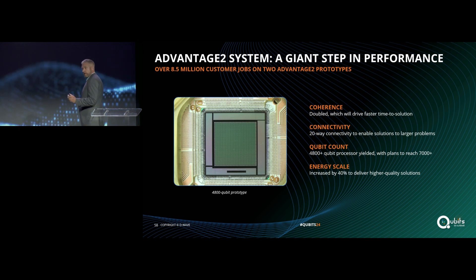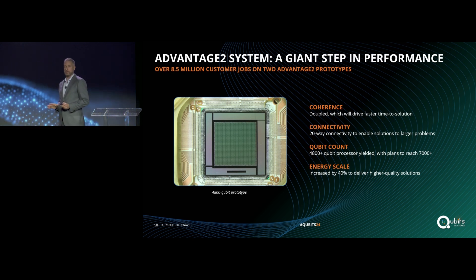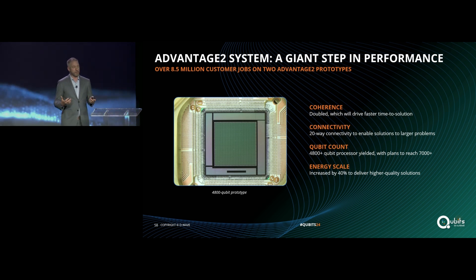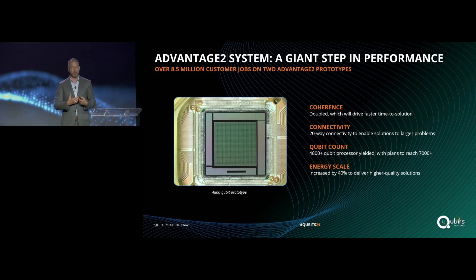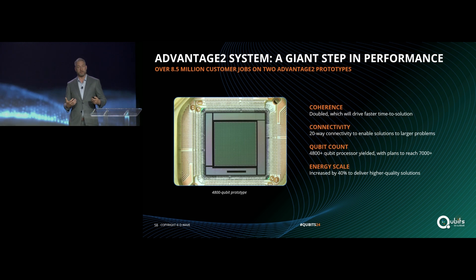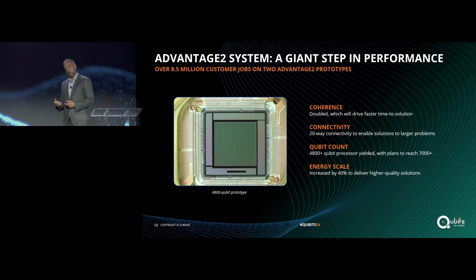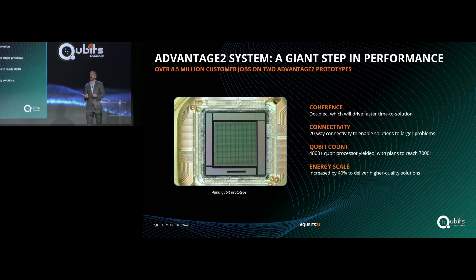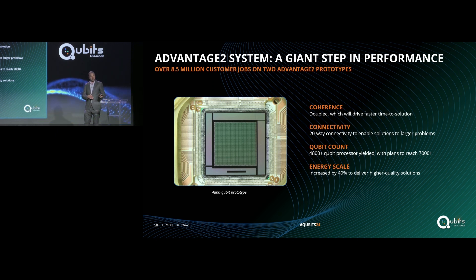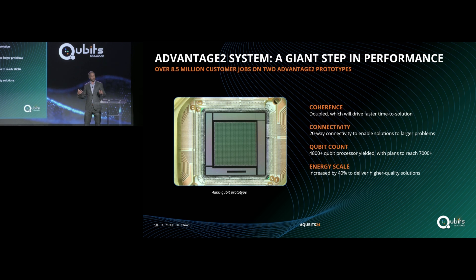There are four pillars where we've pushed Advantage 2 over the Advantage technology. The first is coherence — the more coherent we can make these processors, the faster we get answers and the faster the time to solution for hard optimization problems. Connectivity is also king: going from our Chimera topology to Pegasus, from 2000Q to Advantage, we saw massive gains in performance going from 6-way to 15-way connectivity, and we're taking this further with Advantage 2 going to 20-way connectivity.